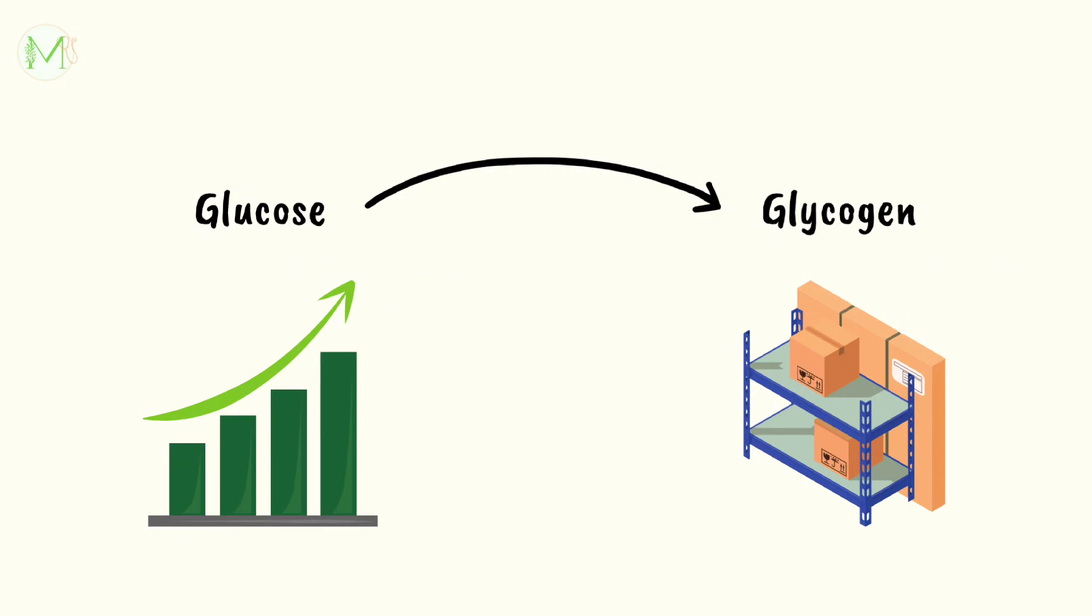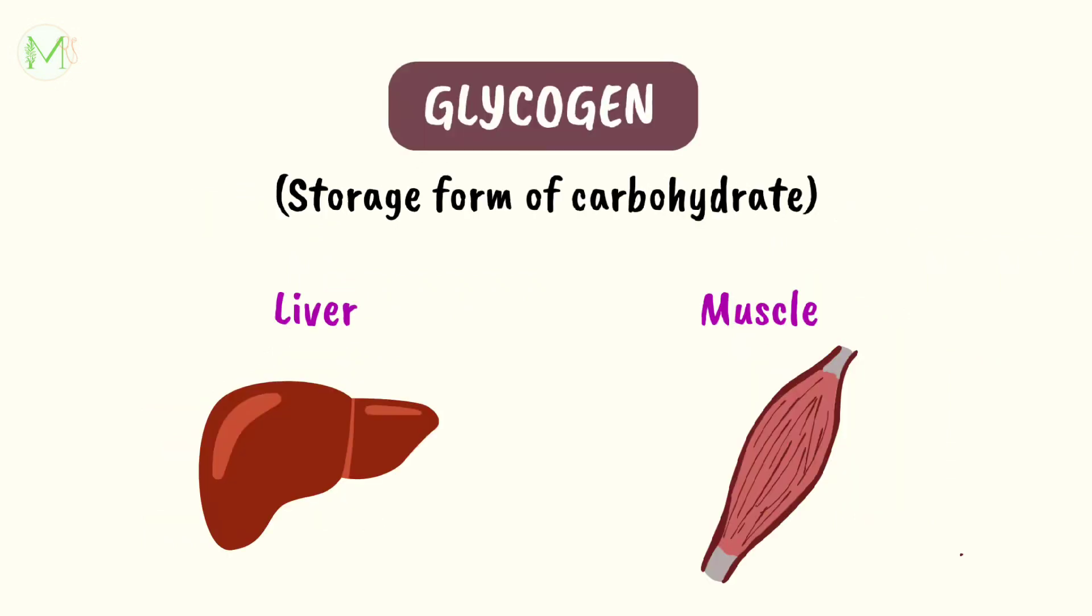What is glycogen? Glycogen is a storage form of carbohydrate where they are majorly stored in liver and muscle.